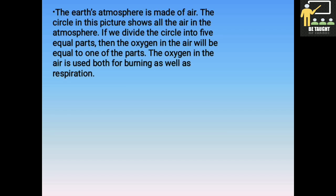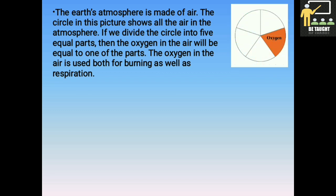Now we shall learn about the different gases present in the air. The earth's atmosphere is made of air. The circle in this picture shows all the air in the atmosphere. If we divide the circle into 5 equal parts, then the oxygen in the air will be equal to one of the parts. Apart from oxygen, there are other gases in the atmosphere. The oxygen in the air is used both for burning as well as respiration, that is breathing.